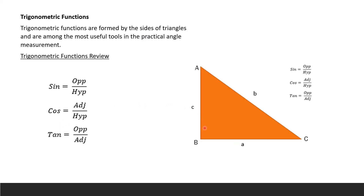Now a review of trigonometric functions. They are formed by the sides of your triangle and are among the more useful tools in practical angle measurement. We use trigonometry functions to measure angles. Sine is opposite divided by hypotenuse. The hypotenuse is the longest side of your triangle. The opposite is the opposite side of the angle you are measuring, and the adjacent side is the adjacent side of the angle you are measuring. Cosine is adjacent divided by hypotenuse, and tangent is opposite divided by adjacent.